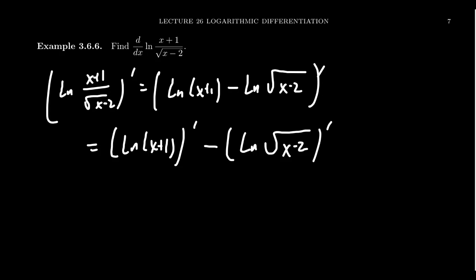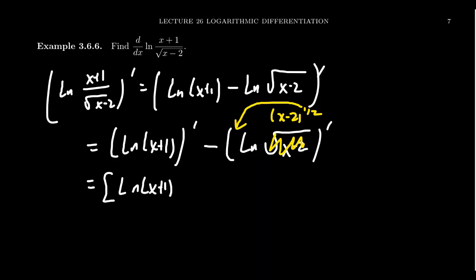Also, look at the second term — the square root of x minus 2. We can think of it as x minus 2 to the 1/2 power. Inside of a logarithm, the exponent can be brought outside as a coefficient. That coefficient can then be factored out of the derivative process. So this looks like we're going to take the derivative of the natural log of x plus 1, and then subtract from that 1/2 times the derivative of the natural log of x minus 2.